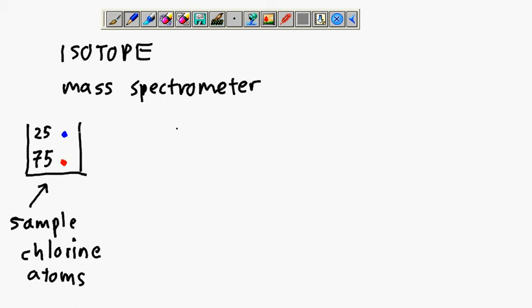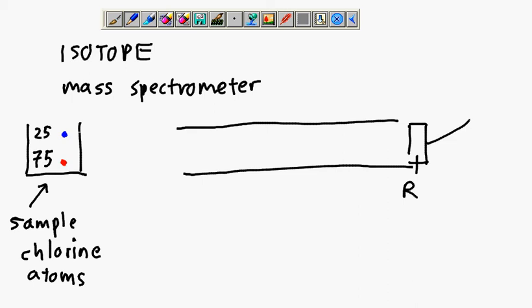I'll give you a simplified view of a mass spectrometer. At the end, they have a recorder connected to a super computer or PC, a Super Personal Computer.